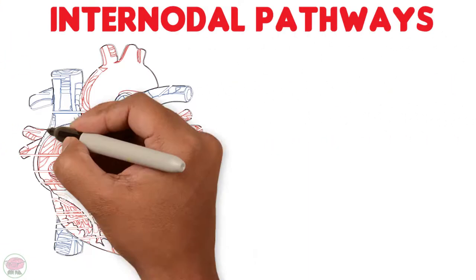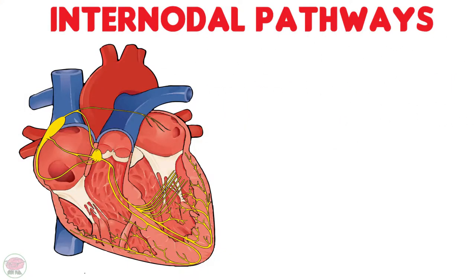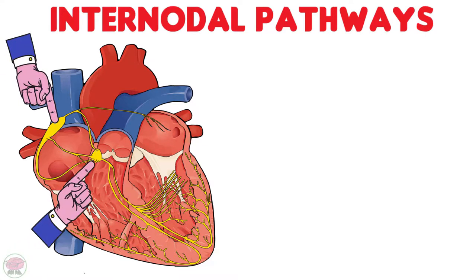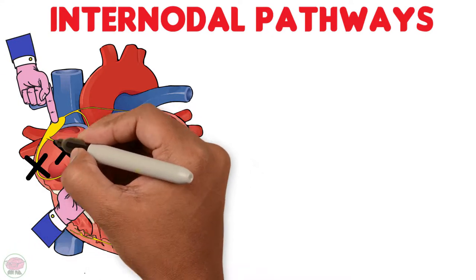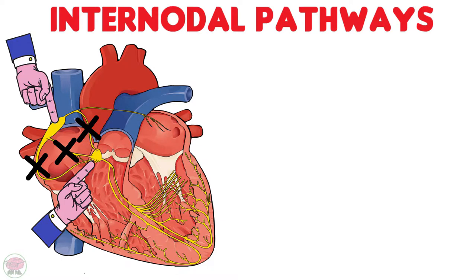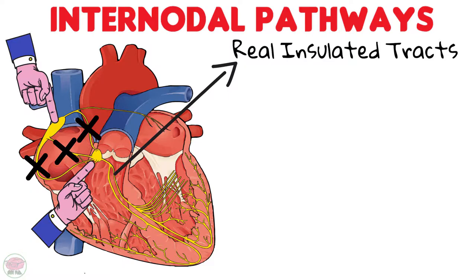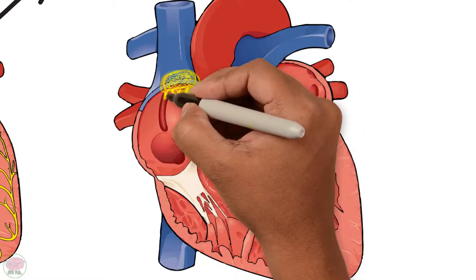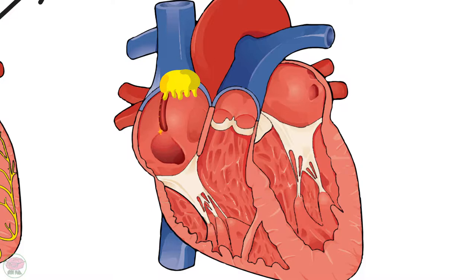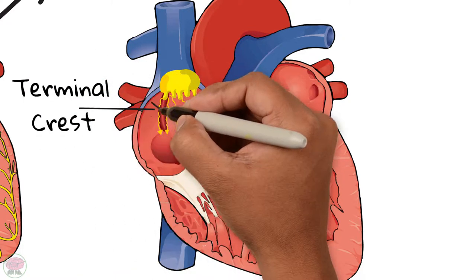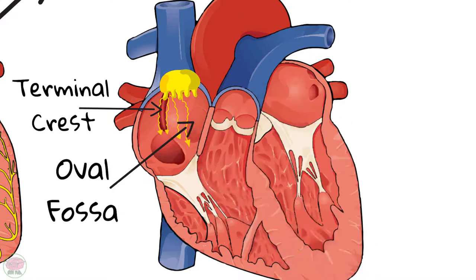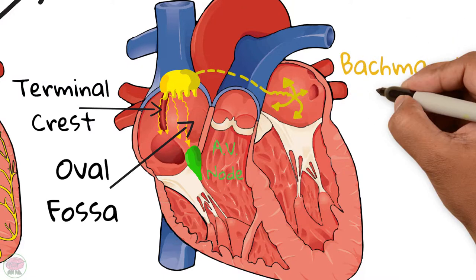The internodal pathways were supposed to be real pathways connecting the sinoatrial and atrioventricular nodes. However, there is no evidence that such tracts really exist within the atrial walls, as they do in the ventricles where there are real insulated tracts. The impulse generated in the SA node travels rapidly through the atrium without the need for insulated tracts, moving downward through the terminal crest and the margins of the fossa ovalis to reach the AV node. To reach the left atrium, the impulse travels through a broad band of cardiac muscle called the interatrial tract, also known as the Bachmann bundle.